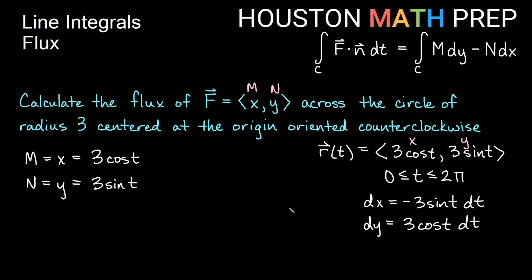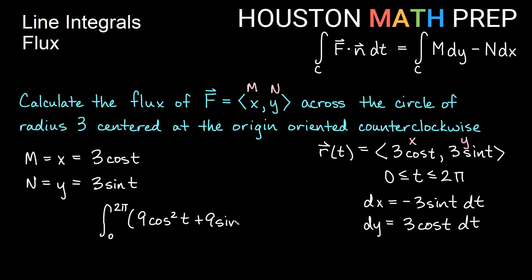Taking all of m, n, dx, dy and plugging into our integral: flux equals the integral from 0 to 2π of m dy — that's 3 cosine t times 3 cosine t — giving us 9 cosine squared t. Then minus n dx: n is 3 sine t and dx is negative 3 sine t, giving negative 9 sine squared t, but with the minus sign that becomes plus 9 sine squared t. Factoring out dt to the end.